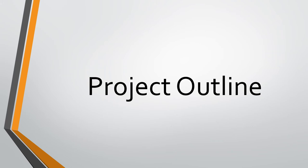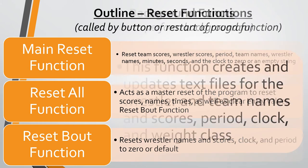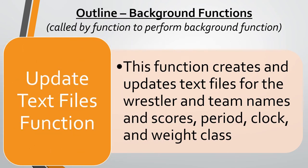Let's start with the reset functions. There's the main reset function, which resets the team names, wrestler scores, period, and wrestler names — basically everything to an empty string. There's also the reset all function; the two are different because one resets the text files and scoreboard as well as clearing the entry boxes, while the other just resets everything to their default value. The reset bout function resets wrestler names, scores, clock, and period to their defaults.